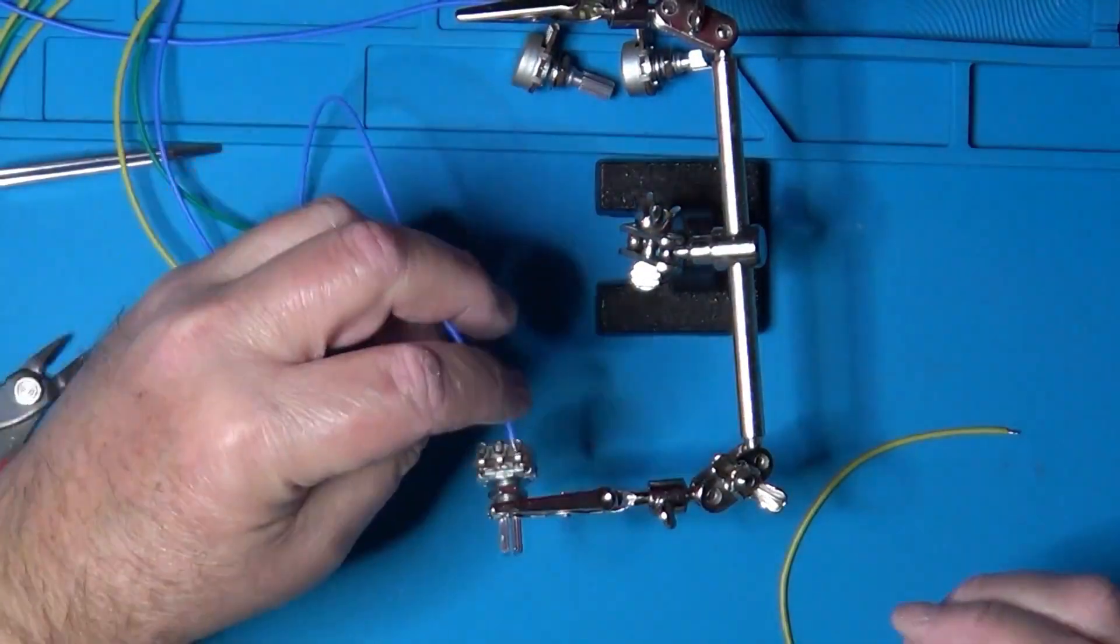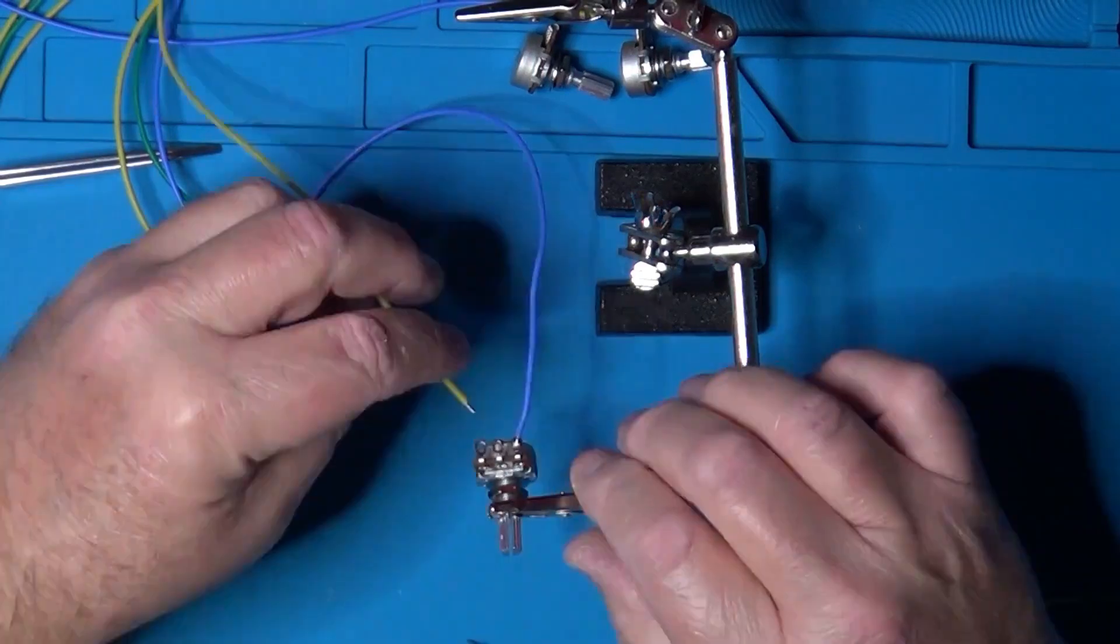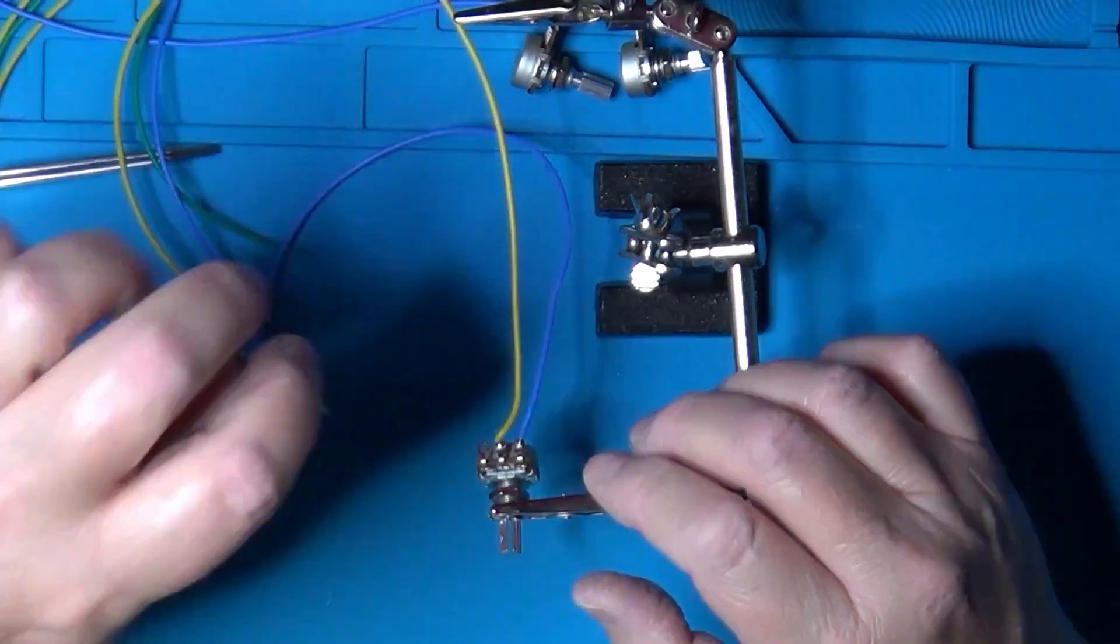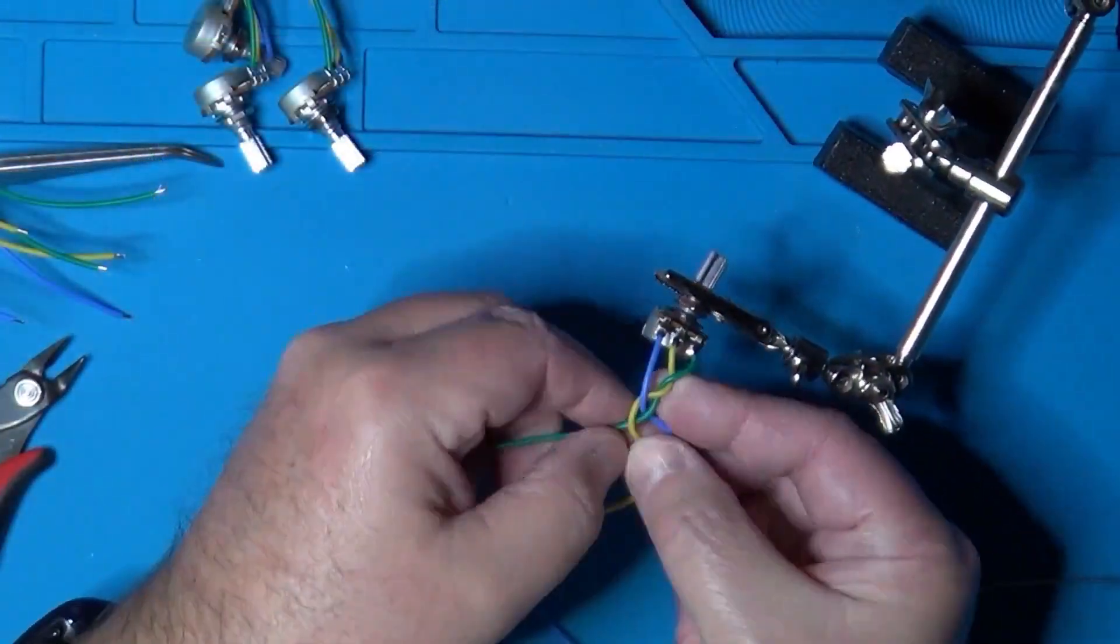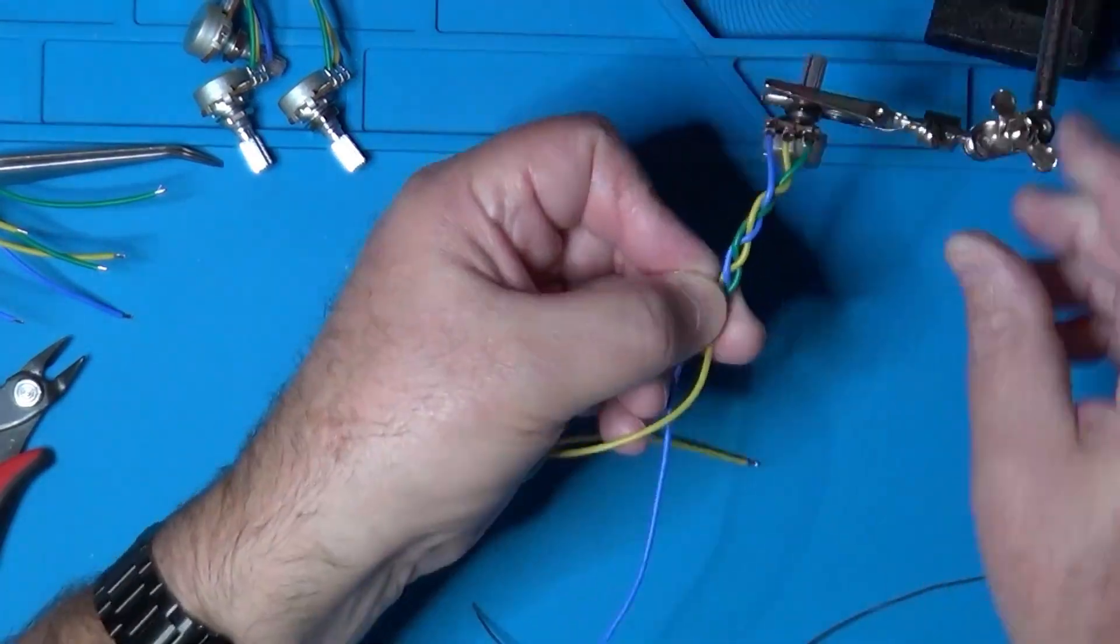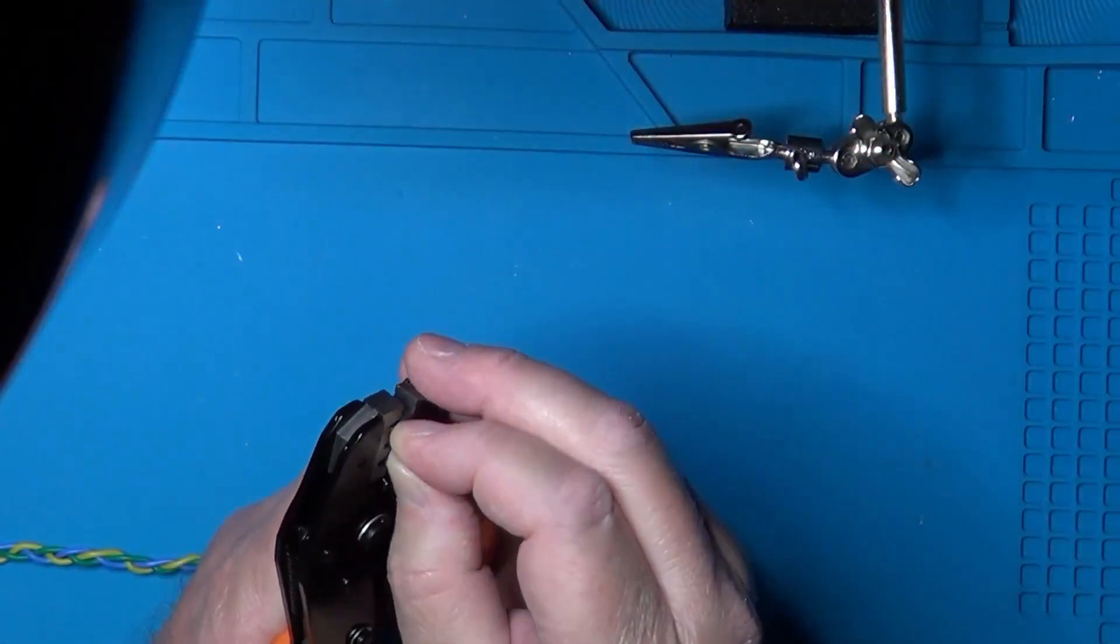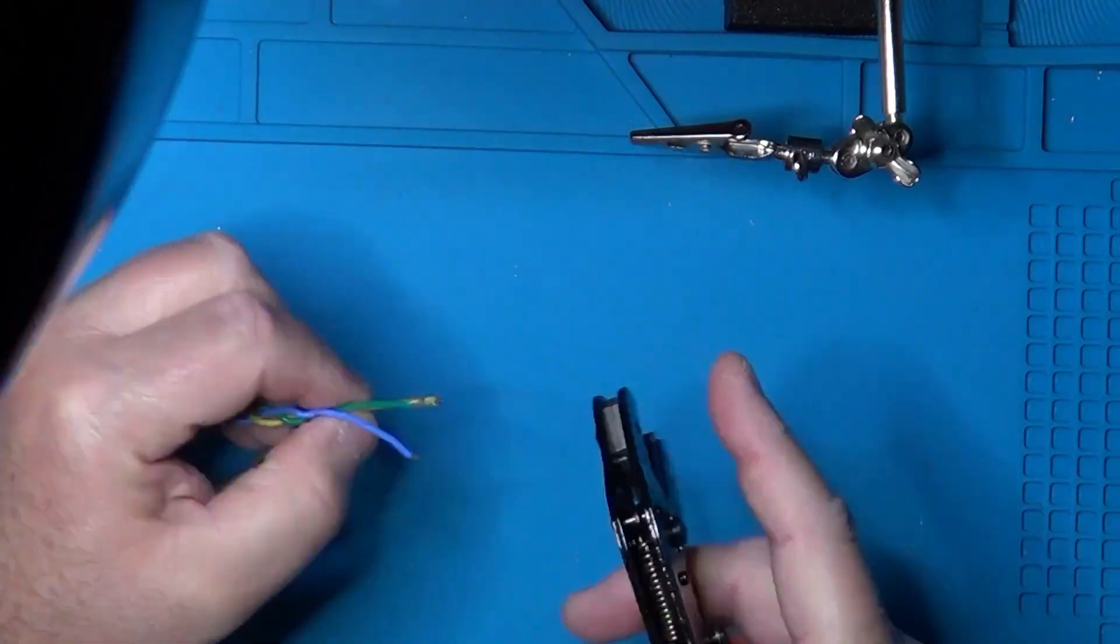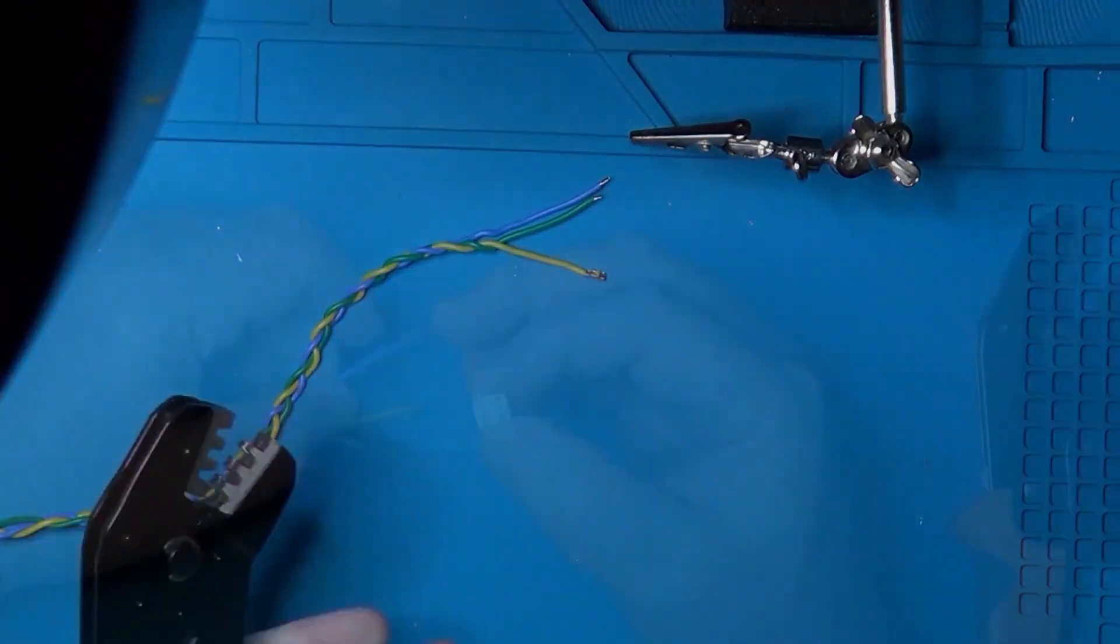However, I still had to prepare the components that had to be connected to the board through cables and connectors. First of all, the potentiometers. For those, I first soldered the wires on the potentiometers themselves. Then I braided the cables so they would not spread around in a perfect chaos. Finally, I crimped the pins on the other end of the wires. These are the kind of pins that you crimp on the wires and then fit into the casing of a JST-XH connector.